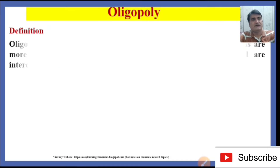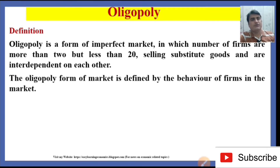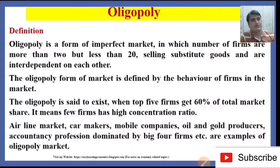Oligopoly is a form of imperfect market in which the number of firms is more than 2 but less than 20, selling substitute goods and are interdependent on each other. The Oligopoly form of market is defined by the behavior of firms. Oligopoly is said to exist when the top 5 firms get 60% of the total market share, meaning few firms have a high concentration ratio. Examples include airline markets, car makers, mobile companies, oil and gold producers, and industries dominated by big 4 firms.